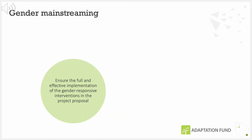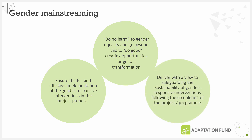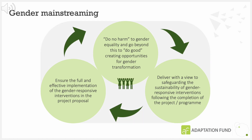Implementing entities must ensure the full and effective implementation of the gender responsive interventions in the project proposal. In line with the Gender Continuum presented in Module 1 of this course, during implementation the project should follow two principles stated in the Adaptation Fund gender policy: do no harm to gender equality, and to do good by creating opportunities for gender transformation, whilst also delivering with a view to safeguarding the sustainability of gender responsive interventions following the completion of the project or programme. Each element builds on the other to ensure the overall project or programme delivers gender responsive activities and outcomes and strives for gender equality throughout implementation and beyond.